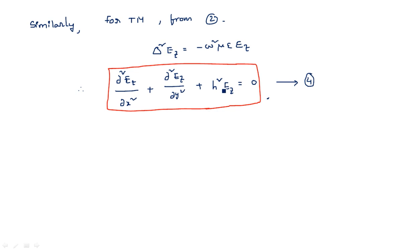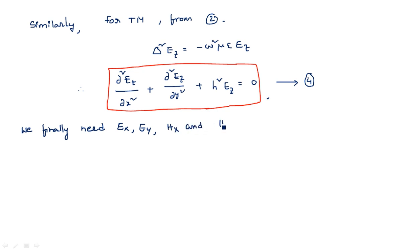Now, using these two partial differential equations, we can calculate Ez and Hz. However, we cannot directly calculate Ex, Ey, Hx, and Hy, because these two equations only contain Ez and Hz parameters. What we finally need are Ex, Ey, Hx, and Hy — the wave equations for the X and Y directions.